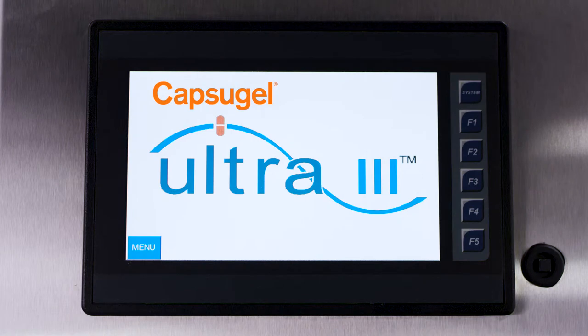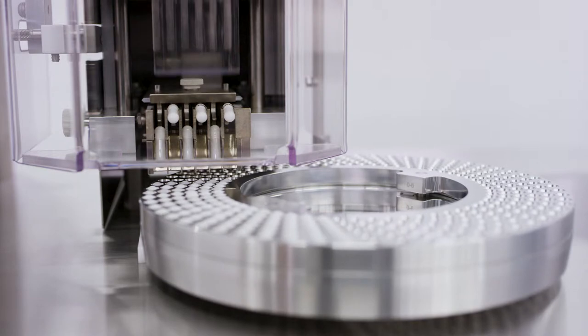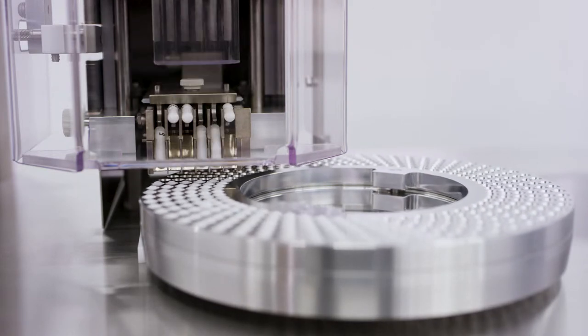Designed for high-speed, semi-automatic filling applications in a CGMP environment, the Capsigel Ultra 3 features an innovative, flexible design, making it the most versatile and capable machine of its kind.